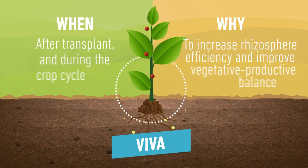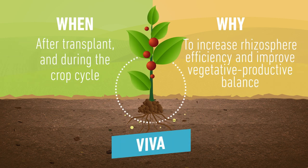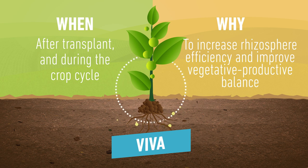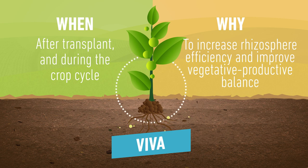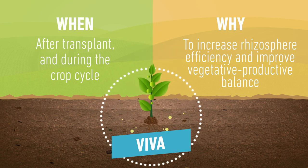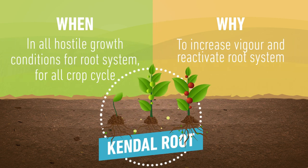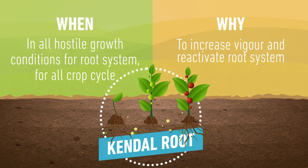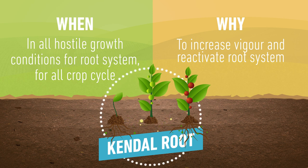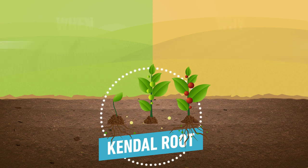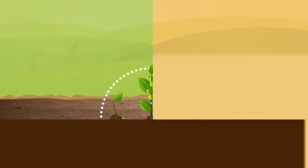Viva: after transplant and during the crop cycle, to increase rhizosphere efficiency and improve vegetative productive balance. And Kendal Root: in all hostile growth conditions for the root system and for all crop cycle, to increase vigor and repristinate root system.